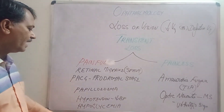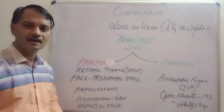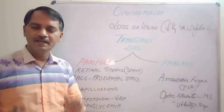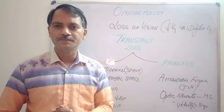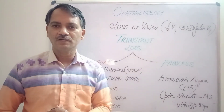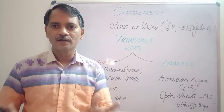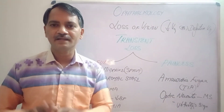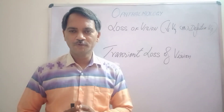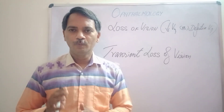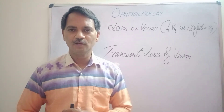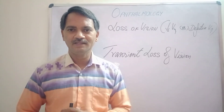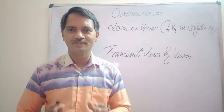Next is hypoglycemia. Whenever the blood sugar level in the blood drops, blackouts are expected. This will stop today's discussion. We will discuss sudden loss of vision in the next video. Thank you.